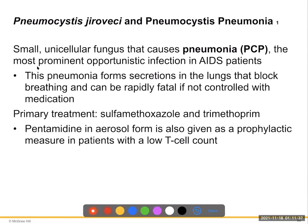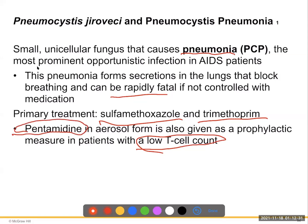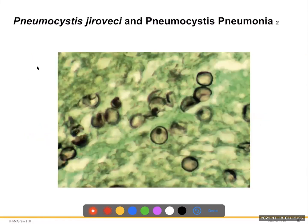Pneumocystis jirovecii pneumonia: small unicellular fungi cause pneumonia and are the most prominent opportunistic infection in AIDS patients — most AIDS patients die of this fungal pneumonia. The pneumonia forms secretions in the lungs that block breathing and can be rapidly fatal if not controlled. Primary treatment is sulfamethoxazole and trimethoprim. Pentamidine in aerosol form is also given as a prophylactic measure to patients with low T-cell counts, such as in AIDS, to prevent this fungus from causing pneumonia.